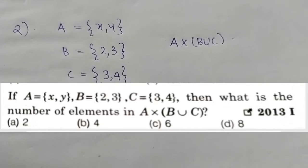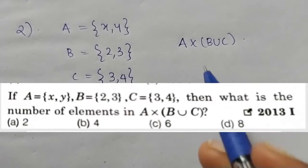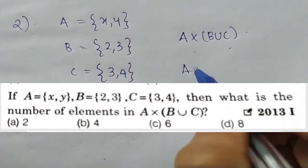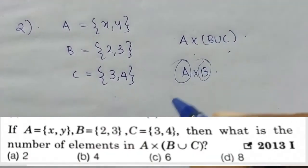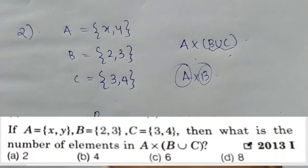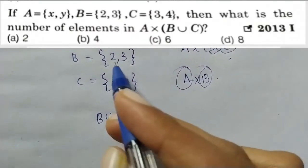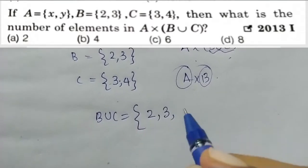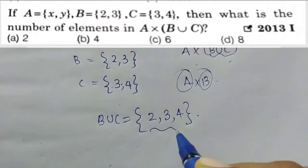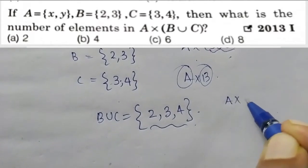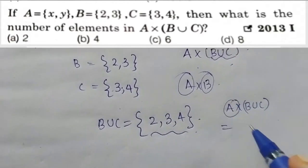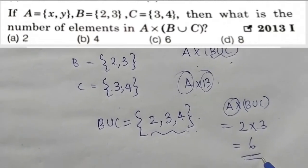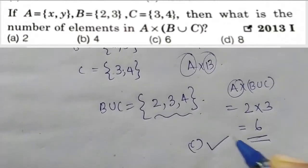Next question. We have sets A, B, and C. We have to check the elements of A×(B∪C). B∪C gives us elements — if C is {2,3}, then B∪C has 3 elements. A has 2 elements. So 2 into 3 is 6. 6 is the answer.